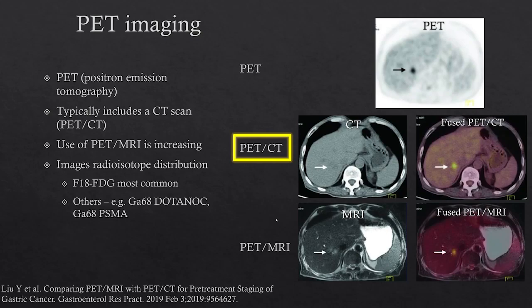The most common tracer is FDG, but there are other tracers being used, including the gallium-68 DOTA tracers for neuroendocrine tumors and gallium-68 PSMA, which is used for prostate cancer imaging.